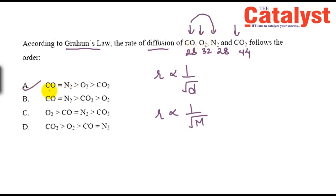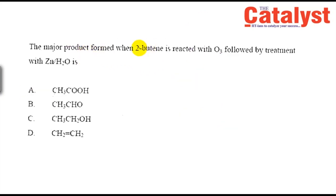Option A will be correct — carbon monoxide and N2 both have the highest diffusion rate, then O2, then CO2. Option A is the right answer. It is a straightforward concept question. Let's move on to the next one.